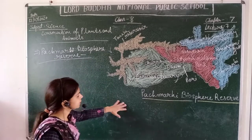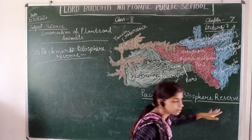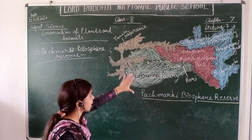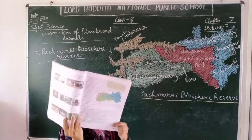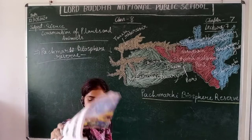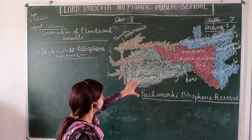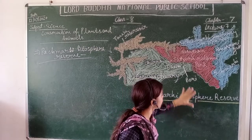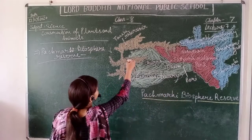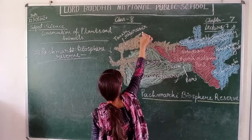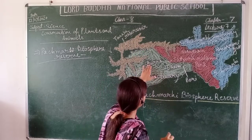You can see the map of Pachmari Biosphere Reserve. The map is made on the blackboard and you can also see it in your book. It is a picture of Pachmari Biosphere Reserve. There is a wildlife sanctuary area shown on it.